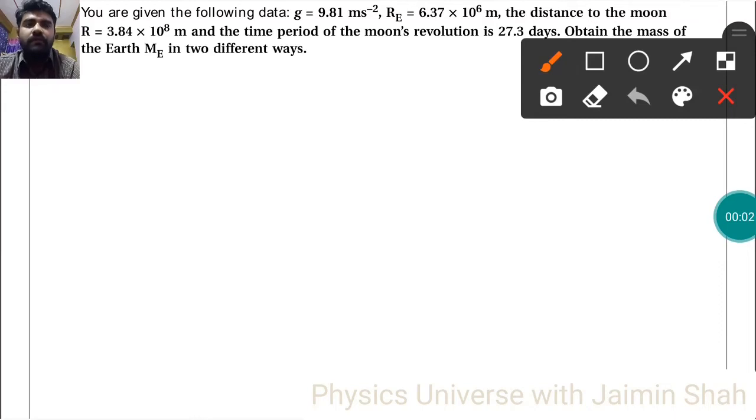The question is: you are given the following data - G, RE the radius of Earth, the distance to the moon R, and the time period of the moon's revolution is 27.3 days. Obtain the mass of the Earth ME in two different ways.